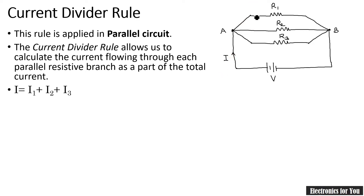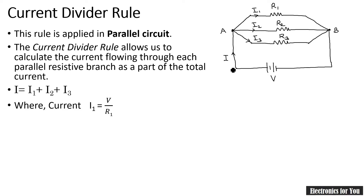In the current divider rule we can calculate individual currents. Let us consider that the total current is I, and the currents flowing through the branches are I1, I2, and I3 respectively. As per the rule of a parallel circuit, total current I is equal to I1 plus I2 plus I3. Here I1 equals V upon R1, I2 equals V upon R2, and I3 equals V upon R3, where V is the supply voltage.